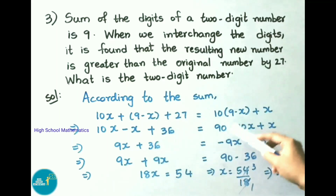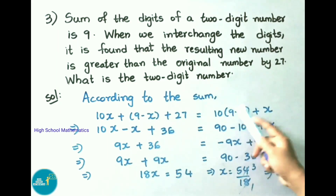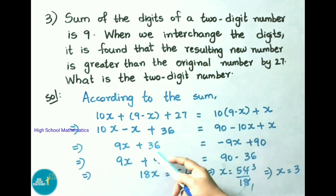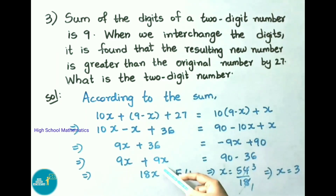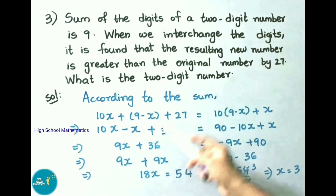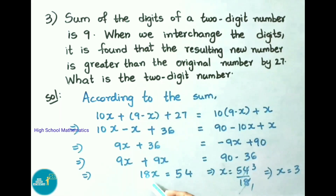Expanding: 9x + 36 = 90 − 9x. Transposing: 9x + 9x = 90 − 36, so 18x = 54. Therefore x = 54/18 = 3.